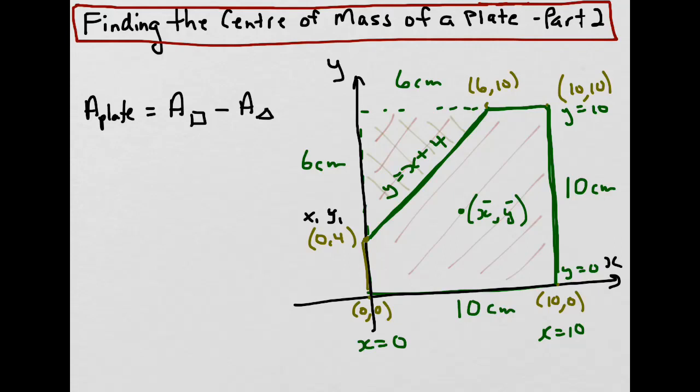The area of the square is length times width, or side times side, which would be 10 times 10.